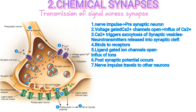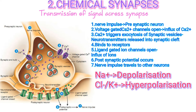The neurotransmitters bind to the receptors in the postsynaptic neuron. The postsynaptic membrane has many ligand-gated channels, and the binding of the neurotransmitters causes the opening of these ligand-gated channels. This causes the influx of ions like sodium, potassium, etc. Depending on the type of ions, the postsynaptic potential produced may be depolarization (excitation) or hyperpolarization (inhibition). For example, opening of Na+ channels allows influx of Na+, which causes depolarization or excitation, while opening of Cl− or K+ channels causes hyperpolarization.